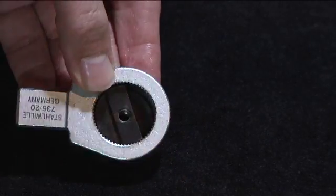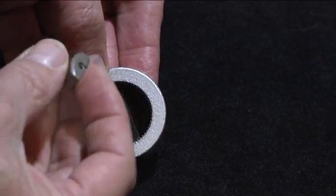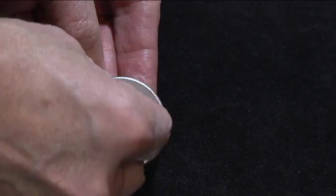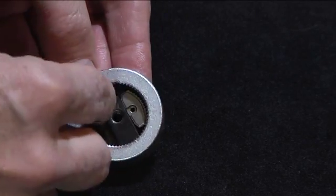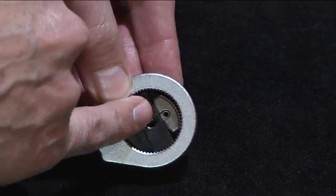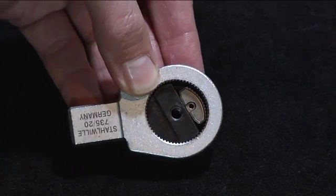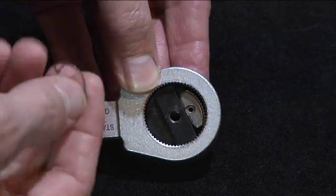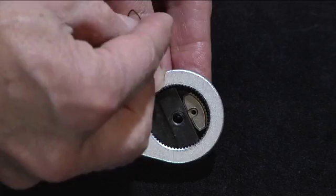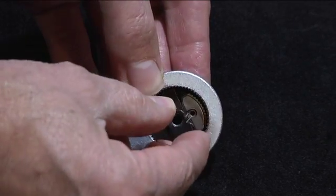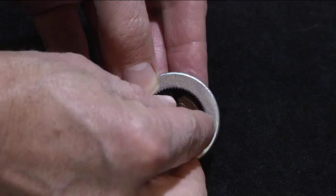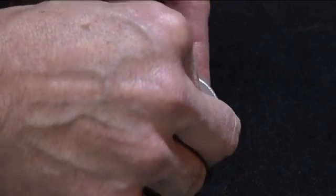Now we take our pawl, we drop the pawl back in, and we make sure that it's facing up with the slot. Now we take our heart-shaped spring and we squeeze that little devil together. We're just going to slide that right into the pawl hole.